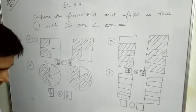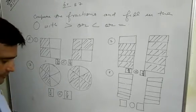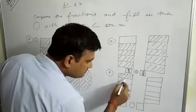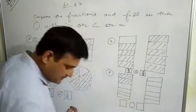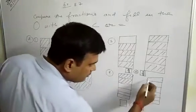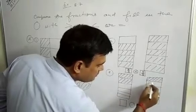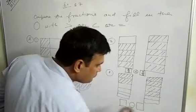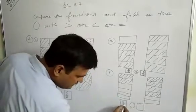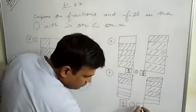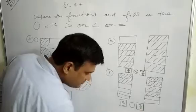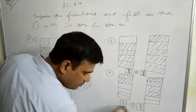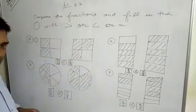In question 4, 2 parts are shaded in the first figure and 4 parts are shaded in the second figure, both with a total of 6 parts. So we write 2 by 6 and 4 by 6. Since 4 is greater than 2, 2 by 6 is less than 4 by 6.